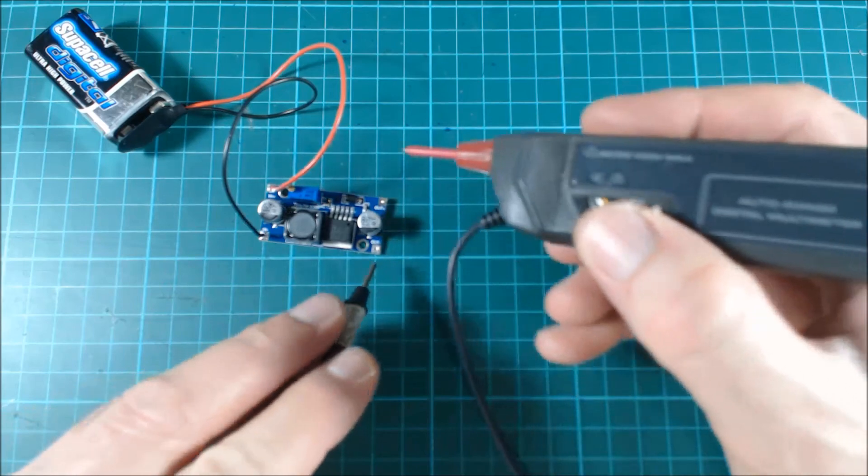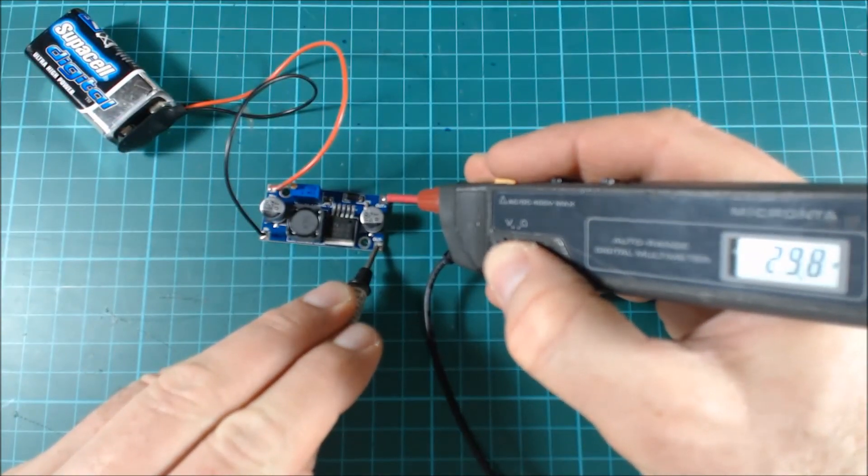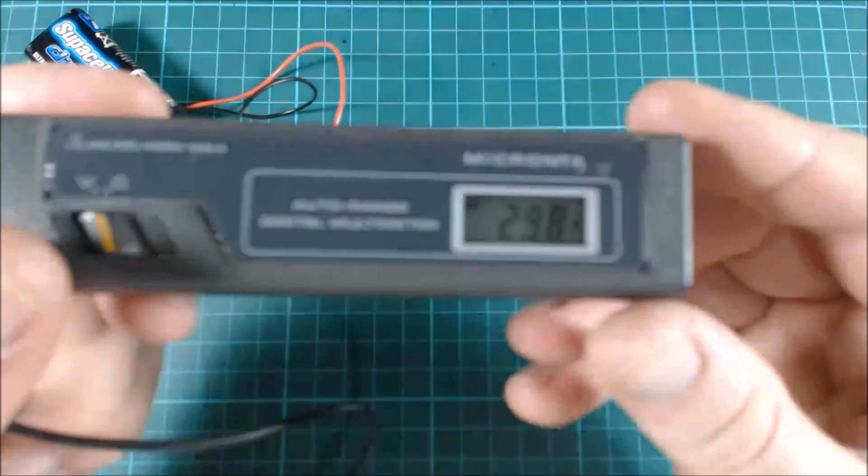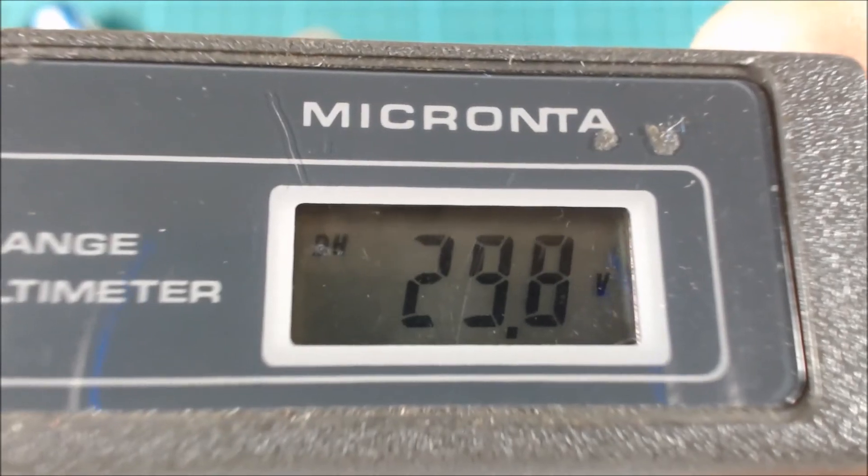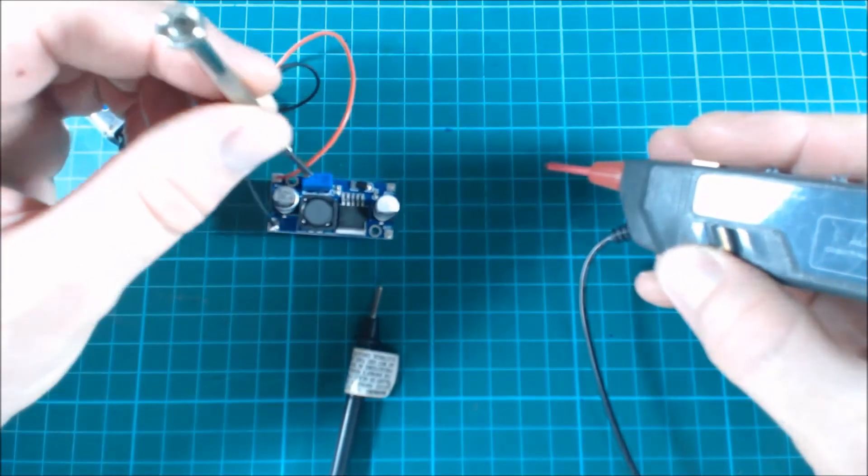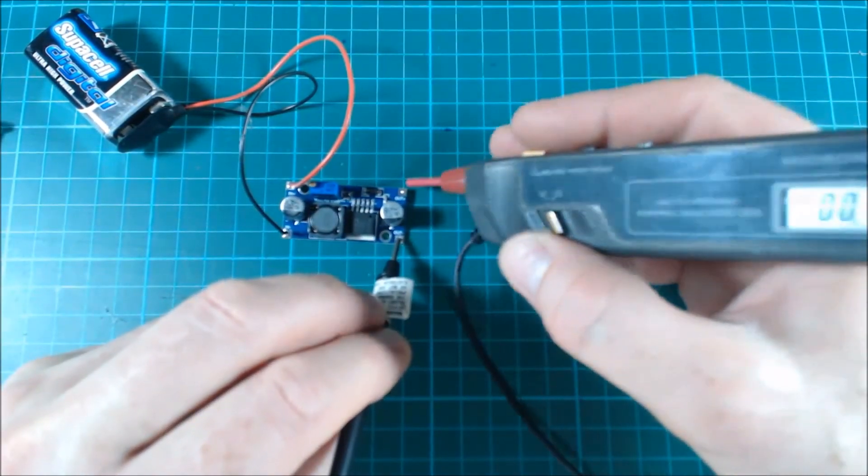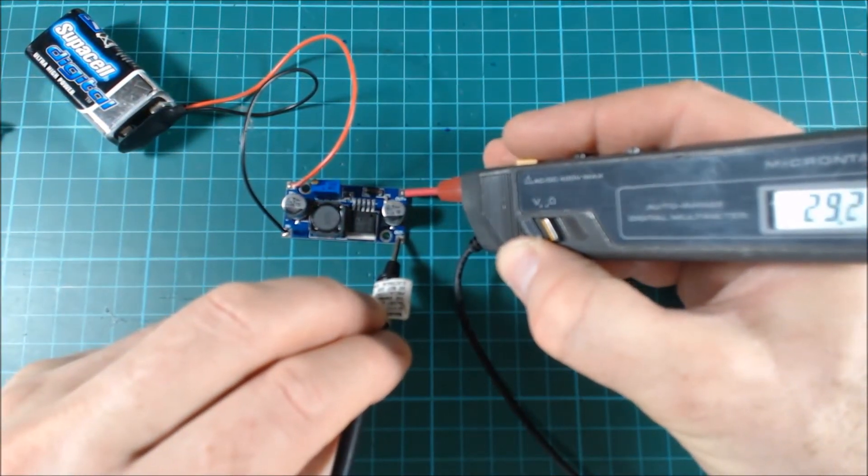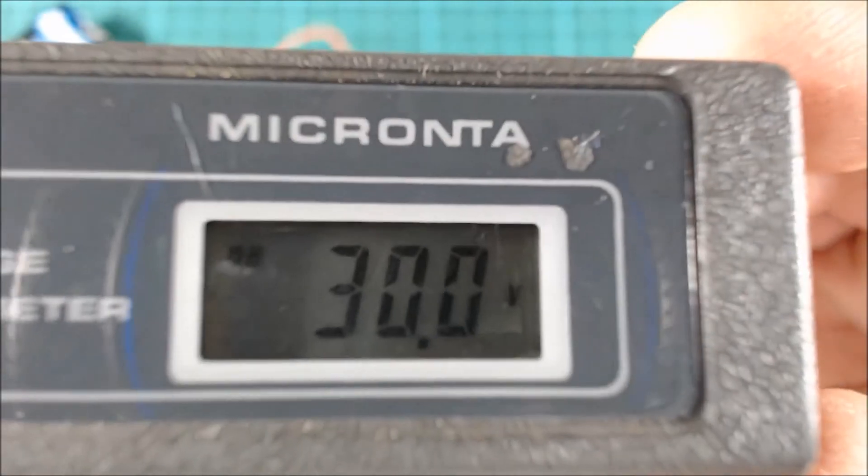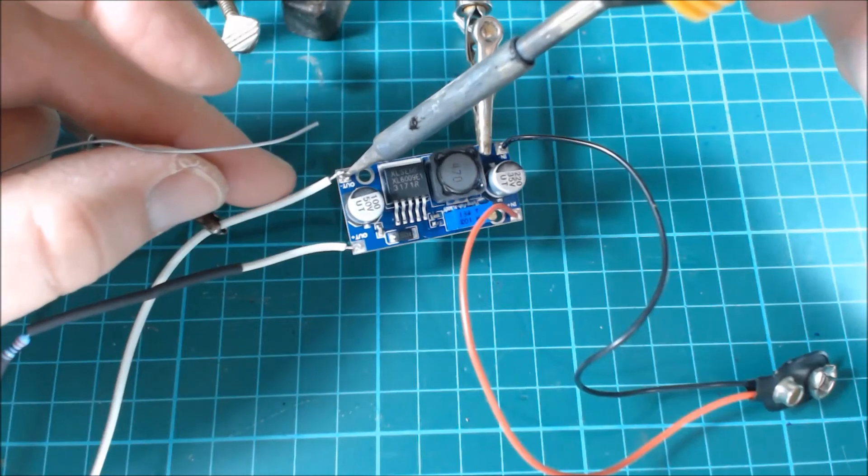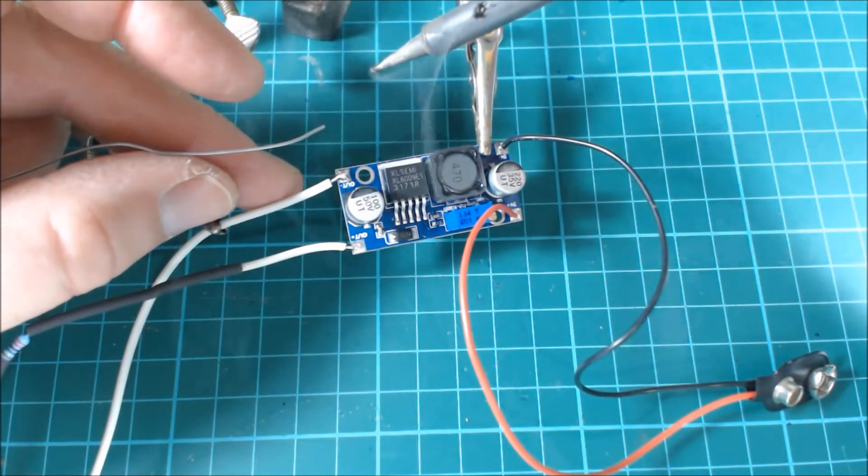Before we solder on the lamp connections we need to set the output voltage for the module. To do this we connect the battery and check the output with a voltmeter. If you have a module with an LCD display you can use that instead. We are aiming to set the output voltage to 30 volts and we can adjust it by turning the screw on the blue potentiometer on the module.